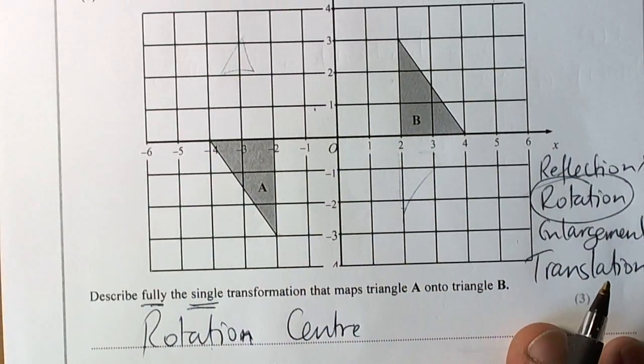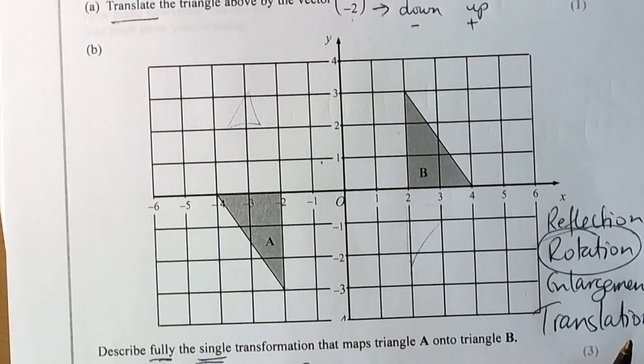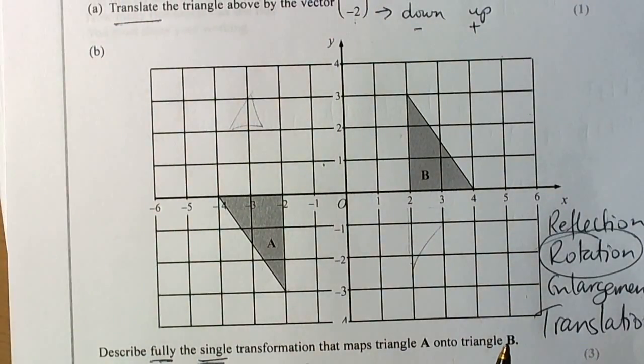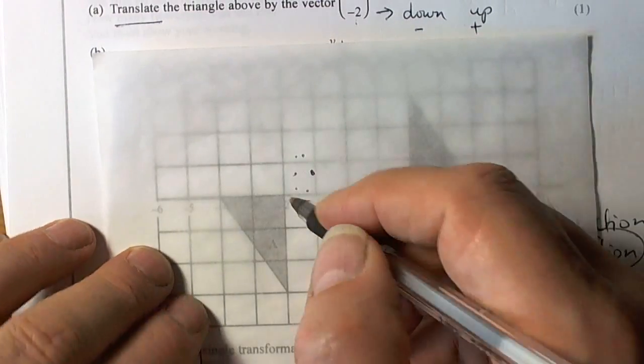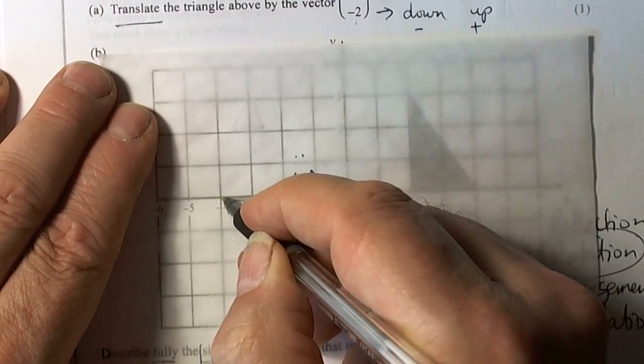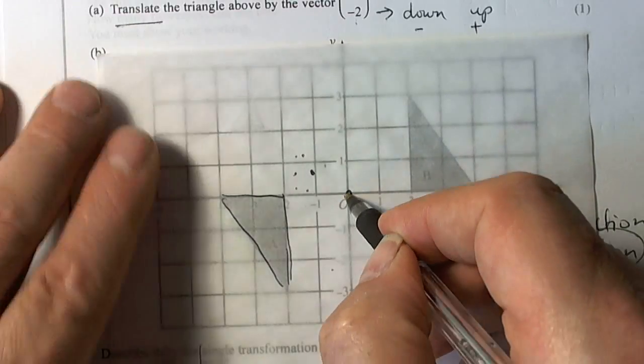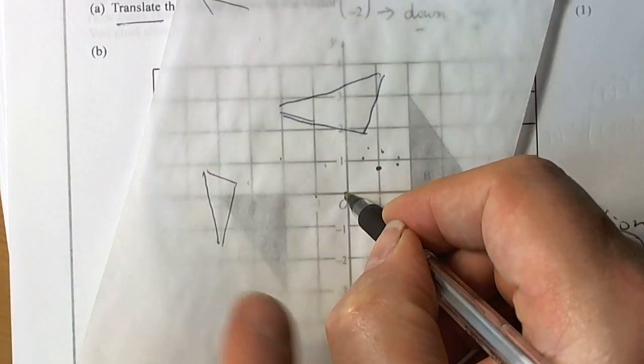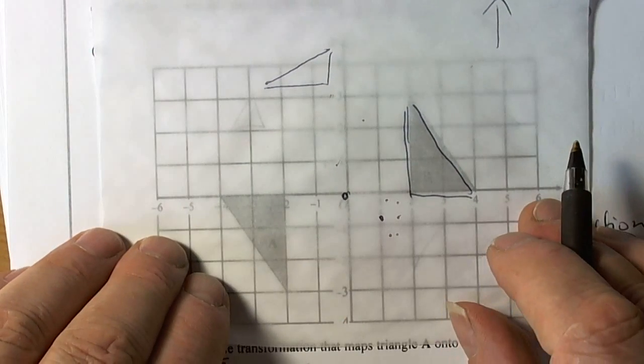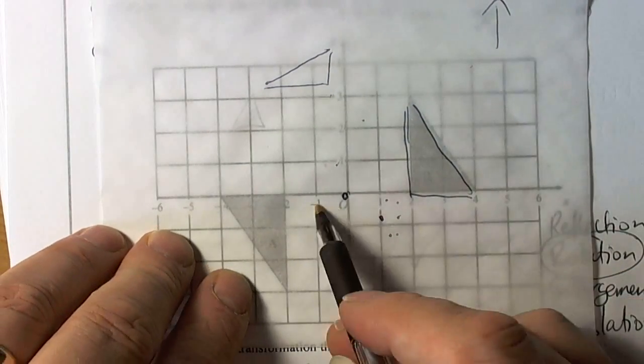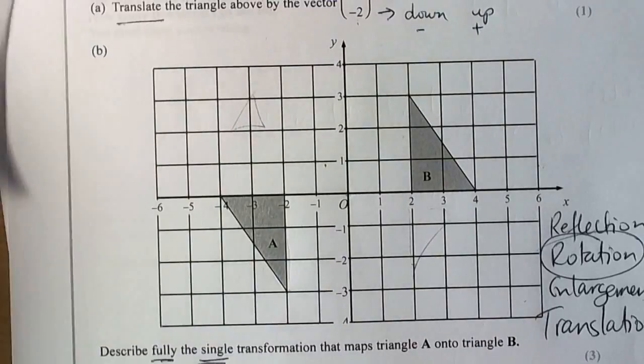Well, hopefully we can see here, by using our tracing paper and so forth, that this would be a straightforward turn. So with our tracing paper, we can see that the center of rotation would be there, and we would check by moving our tracing paper around the angle we think. Well, it's 180, so you have to go around 180 degrees.